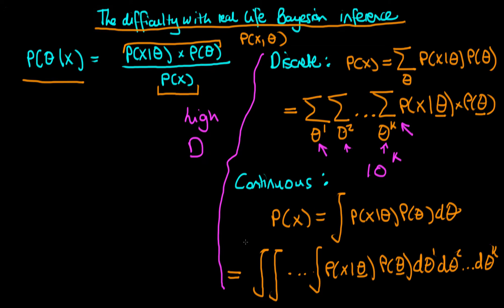There is also a compounding difficulty with evaluating each of these terms: the highly pathological nature of what we're summing or integrating over. Typically, if we use a fairly diffuse prior, it has support over quite a large space — a large range of values. But the likelihood is usually very, very concentrated. What this means in practice is that only a tiny fraction of parameter space actually contributes to either the sum or the integral, and that pathological nature of the prior and the likelihood compounds the difficulty of evaluating these terms.